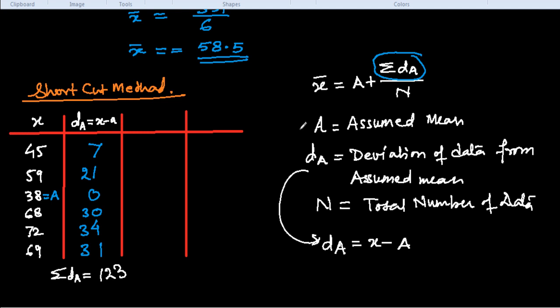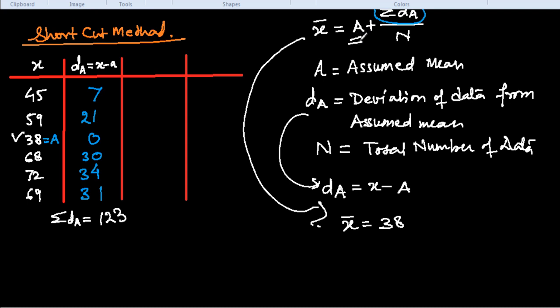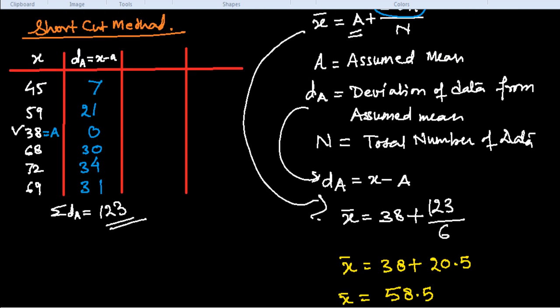So let us put in this formula here. x̄ = the assumed mean is 38. Look at this, A, and this is the formula. I am putting here instead of A, 38 + summation of dA, summation of dA 123, and N is 6 here. So we simplify this now: x̄ = 38 + 123/6 = 38 + 20.5 = 58.5. This is the arithmetic mean of raw data, given data by shortcut method.